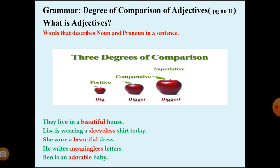Let's look at some adjective examples. 'They live in a beautiful house' — 'house' is a noun and 'beautiful' is an adjective. 'Lisa is wearing a sleeveless shirt today.' 'She wore a beautiful dress.' 'He writes meaningless letters.' 'Ben is an adorable baby.' All the highlighted words are the adjectives describing the nouns.